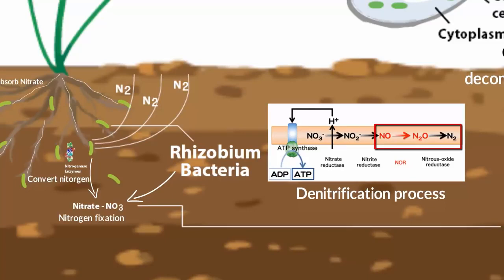This is how nitrogen goes back into the air. Among these gases, nitrous oxide is a greenhouse gas that can remain in the air for over 100 years. It is also one of the reasons behind depletion of the ozone layer. I hope you have understood what the nitrogen cycle is — please keep in mind that bacteria is the key element in every step of the nitrogen cycle.